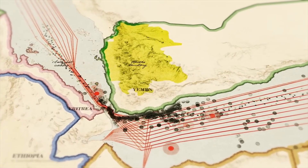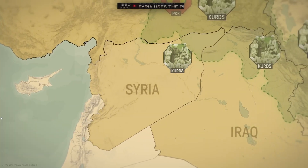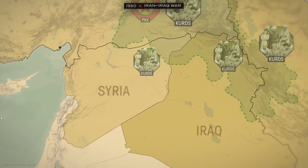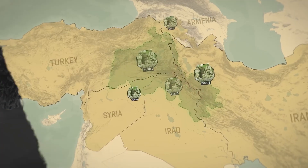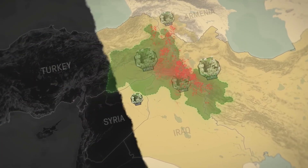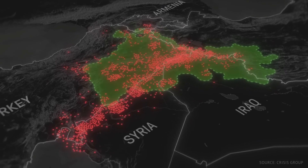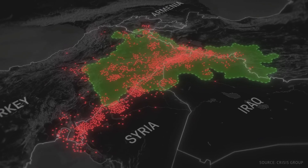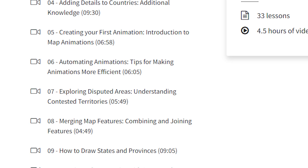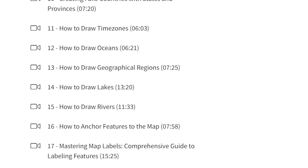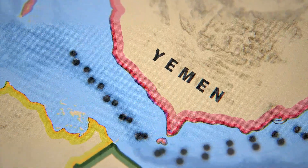I've seen some pretty remarkable map animations. But what takes your Geolayers maps from looking basic to looking really polished? When I look at Geolayers videos on YouTube, I only find basic stuff. So why do I see people paying hundreds of dollars on courses when making beautiful maps is easier than it seems?